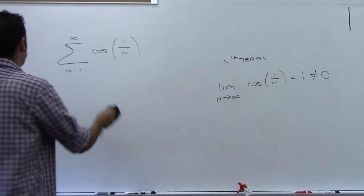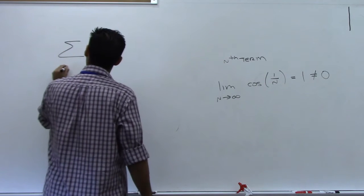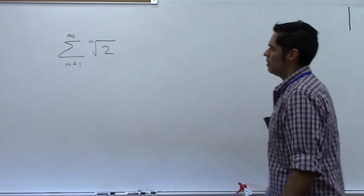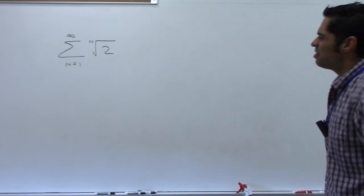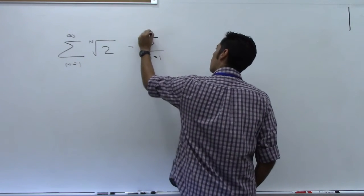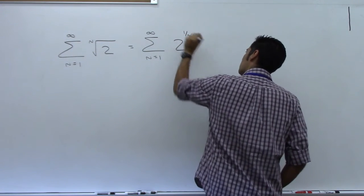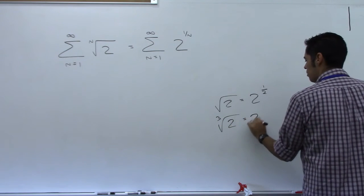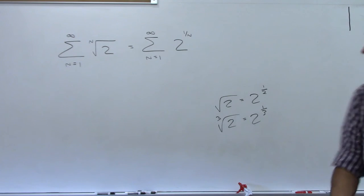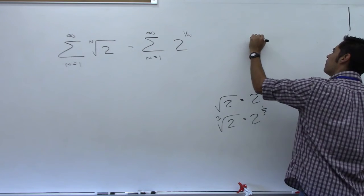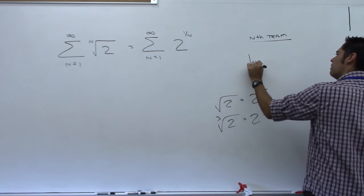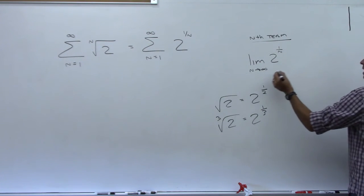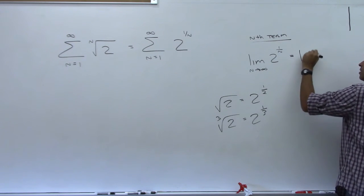Number 19: sum from n=1 to infinity of the nth root of 2. The nth root of 2 means 2 to the 1/n — just like the square root is 2^(1/2) or cube root is 2^(1/3). Trying the nth term test: limit as n goes to infinity of 2^(1/n). As n goes to infinity, 1/n goes to 0, so 2^0 = 1, which is not zero. Therefore this diverges.